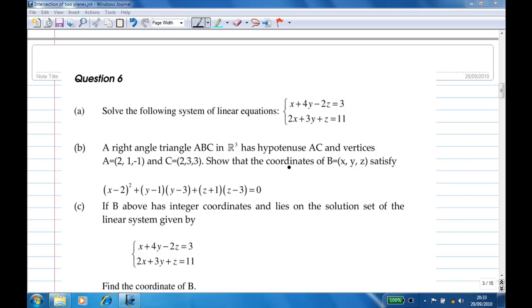Show that the coordinates of B, which is x, y, z, satisfy the equation x minus 2 squared plus y minus 1 times y minus 3 plus z plus 1 times z minus 3 equal to 0.